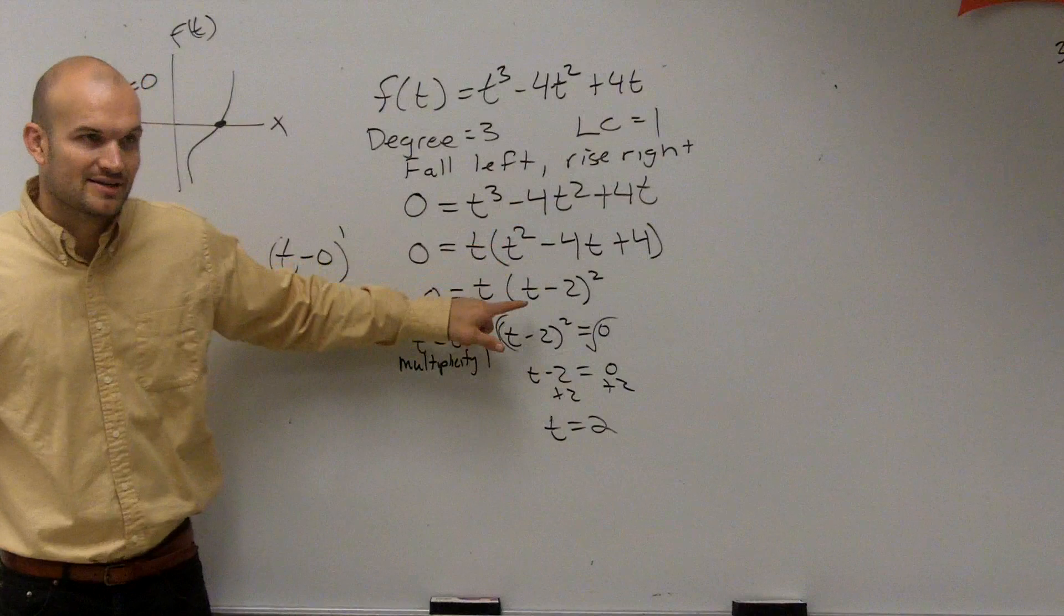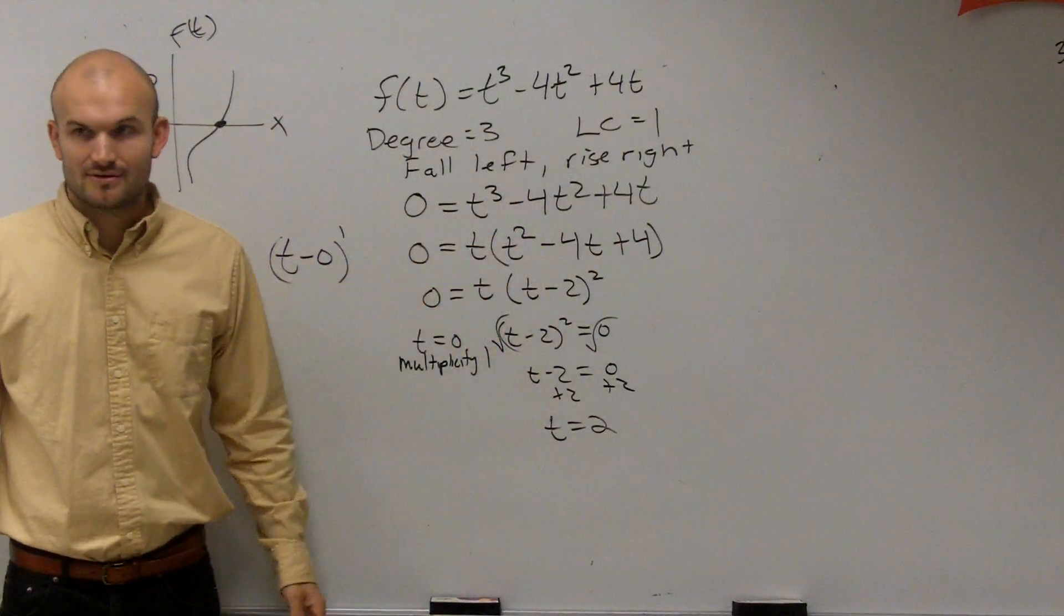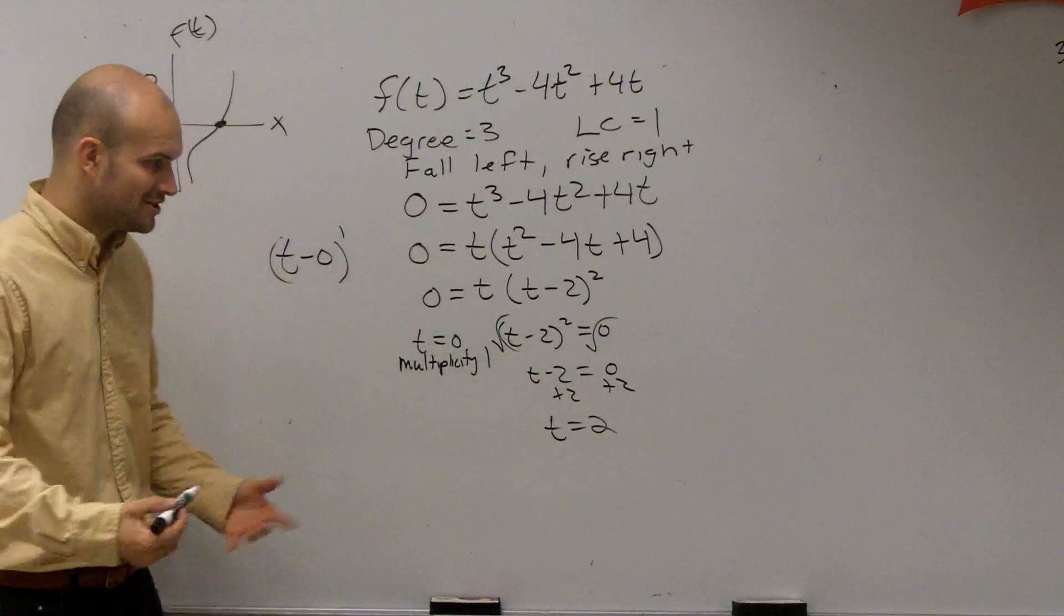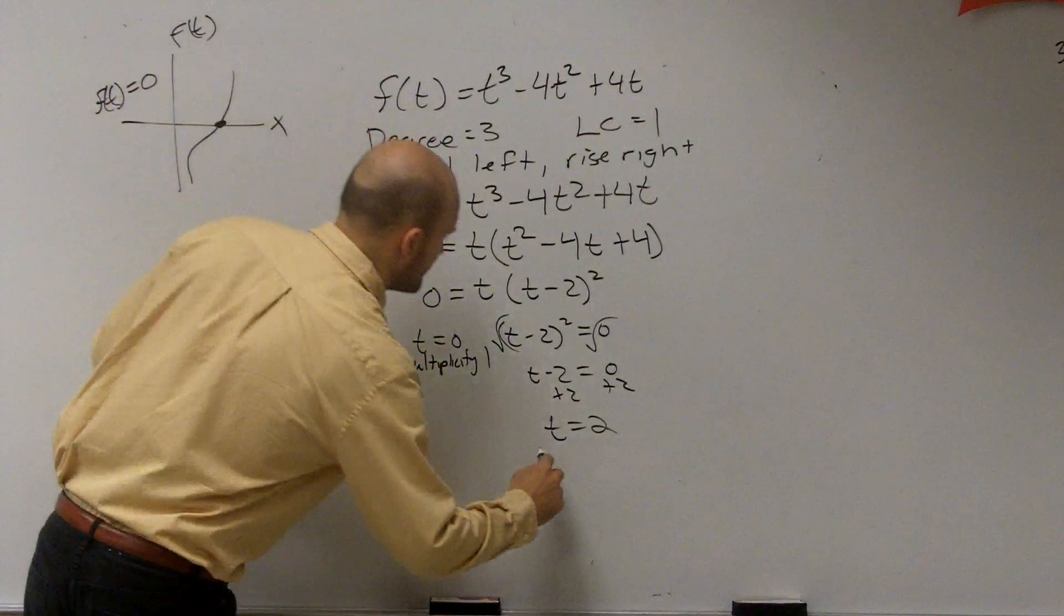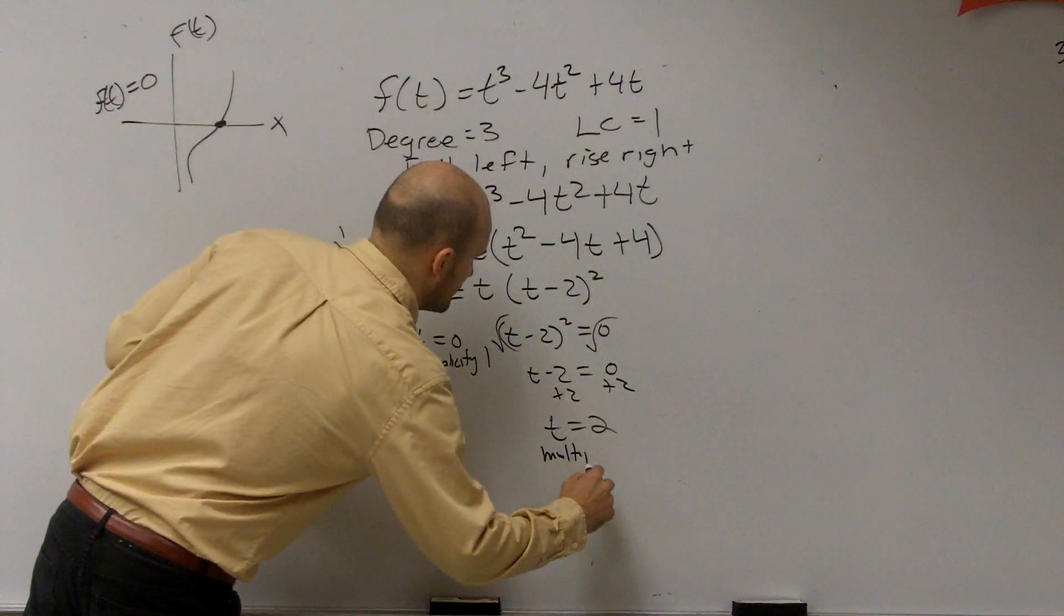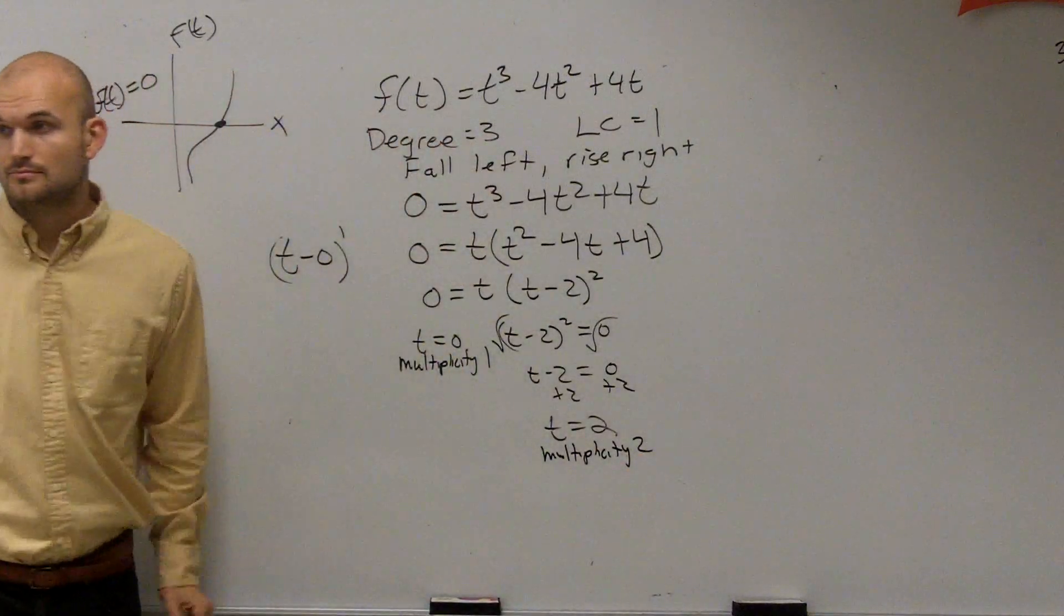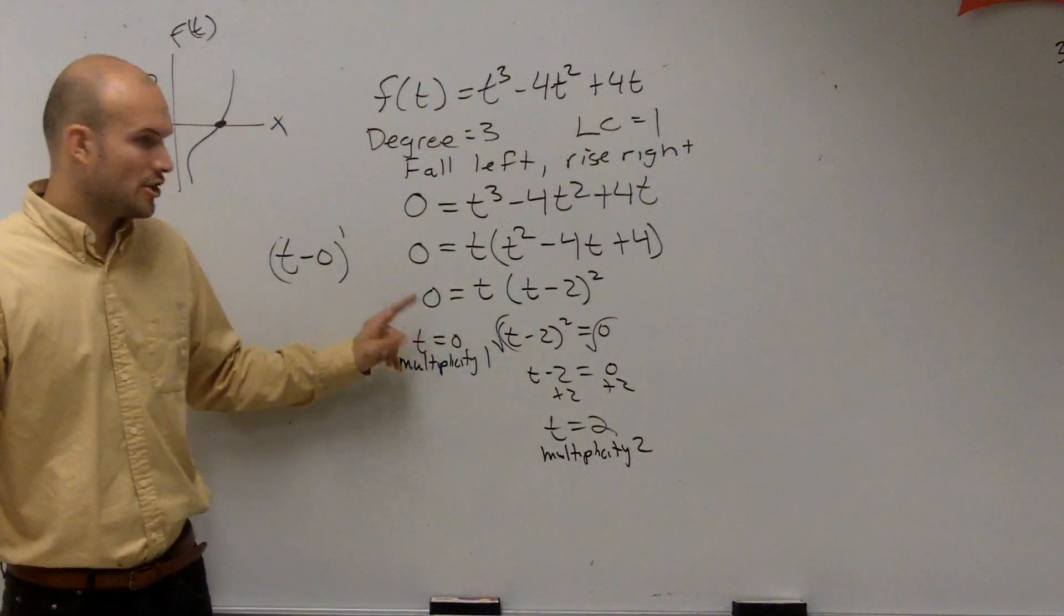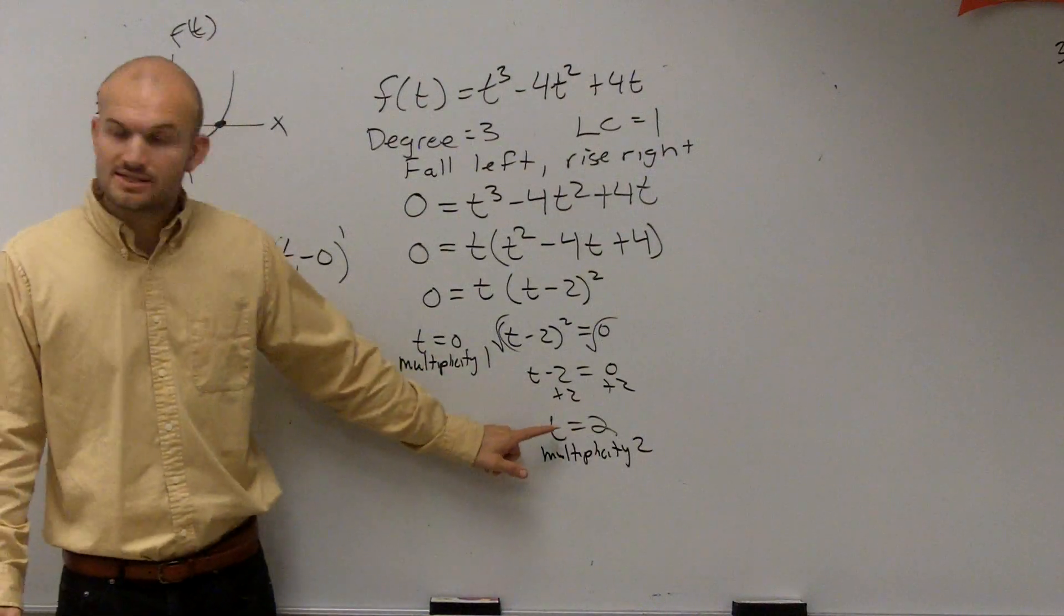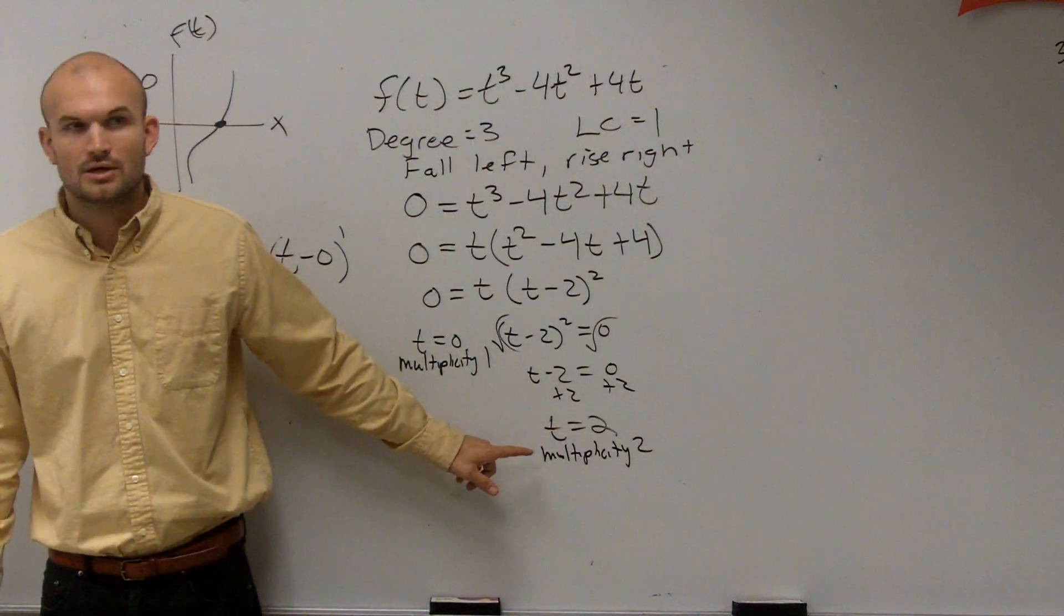Now here, look at this factor. What exponent does this have? 2. So it has a multiplicity of 2. So there's two multiplicities? Two different ones? No, you say this is a zero of multiplicity 1. This is a zero of multiplicity 2.